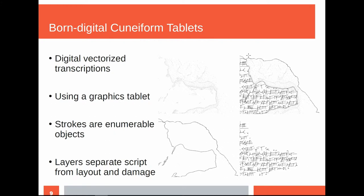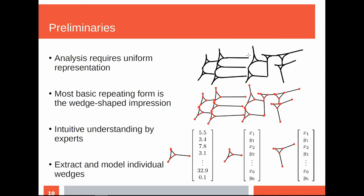We can concentrate on the part where the transcription is, without prior segmentation, which can be hard if you want to decide whether something is damaged or written. If we want to analyze, we need a uniform representation. The most basic repeating form in cuneiform is the wedge-shaped impression — any words expressed in cuneiform use this form. We use this as our basic atom of modeling because it is also an intuitive understanding for experts. What we want to find is a feature vector — a set of numbers which uniquely describe a specific wedge — to model symbols, and we want to extract those from the SVG drawings the assyriologists created.